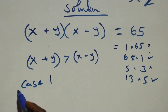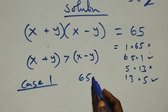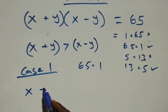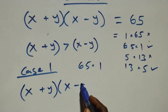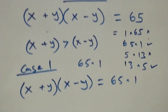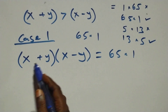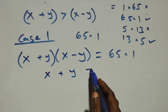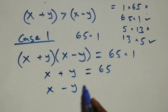Case 1: when 65 is written as 65 times 1. This equation becomes (x + y)(x - y) = 65 × 1. It implies x + y = 65 and x - y = 1.